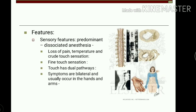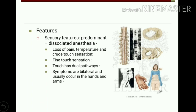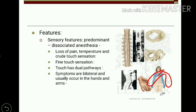Dissociated anesthesia means that when cervical segments are affected, there is loss of pain and temperature sensation, whereas touch sensation is retained. Touch sensation is carried by two pathways: the dorsal column pathway carries fine touch, and the spinothalamic tract carries crude touch. The person has loss of pain, temperature, and crude touch sensation because the crossed fibers of the spinothalamic tract are damaged. As the spinothalamic fibers cross before ascending, cavity formation damages them.